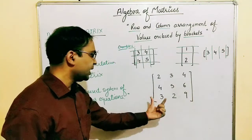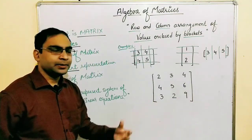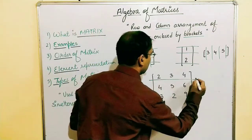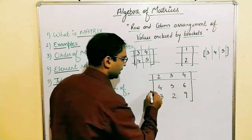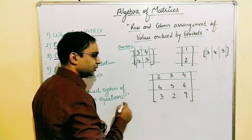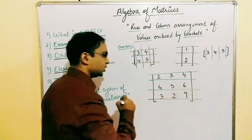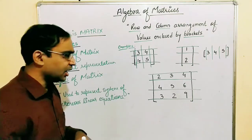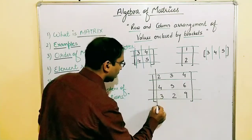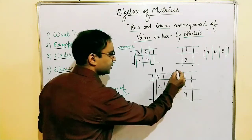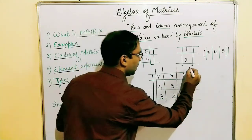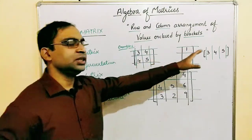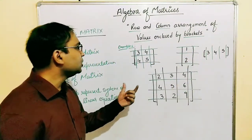Let's talk about another example — a bigger matrix. How many rows do we have? We have row number one, row number two, and row number three. So we can see in this matrix we have three rows. And how many columns? Column number one, column number two, and column number three. All of these contain some values.